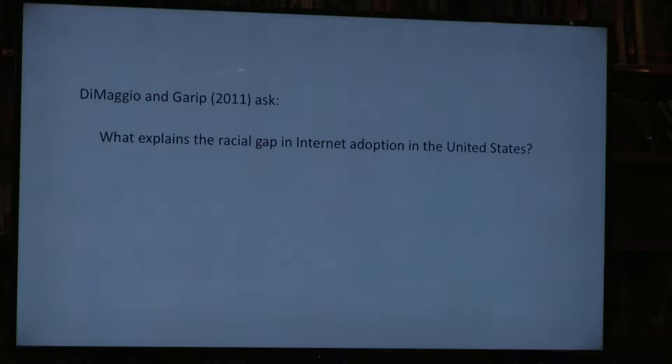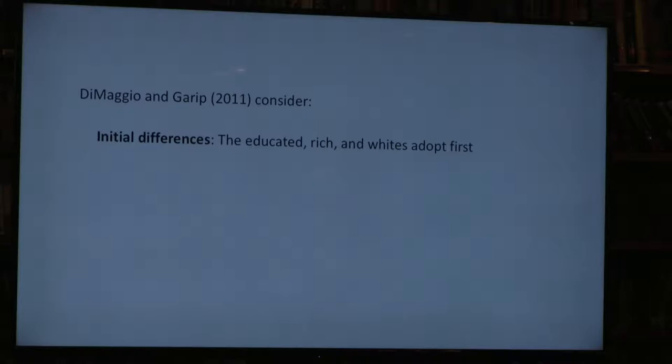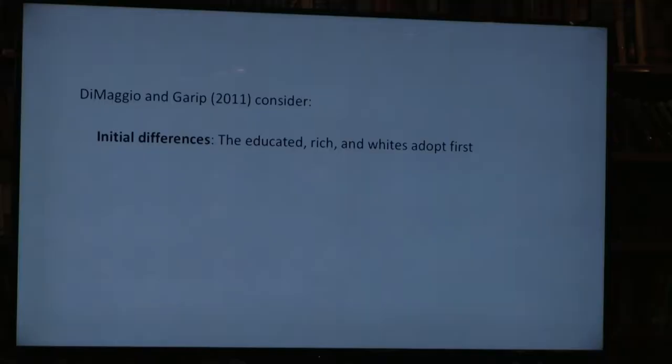Homophily eventually leads to intergroup inequality in outcomes for which our alters offer positive influence. We considered the case of internet adoption in the US. There's still a racial gap in subscription to home internet service—whites are much more likely to adopt internet at home—and this gap remains even after controlling for income and education differences. In the US context, the group of educated, richer people tend to be white.